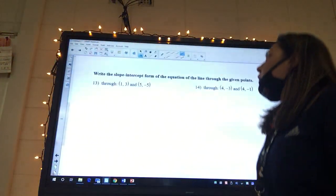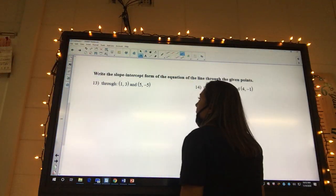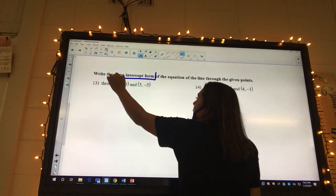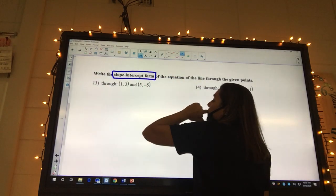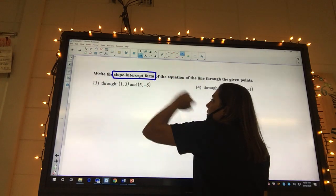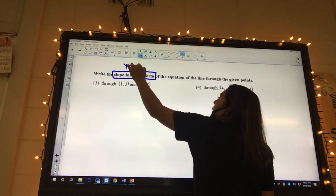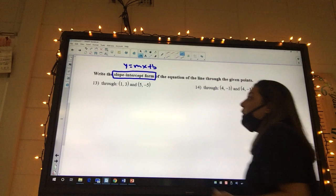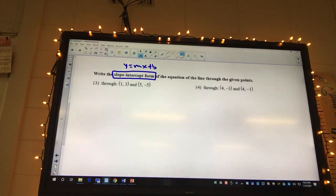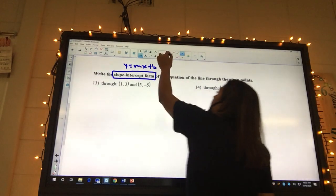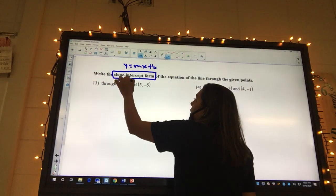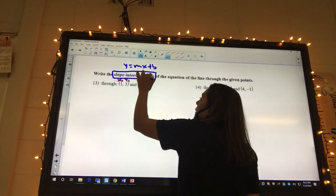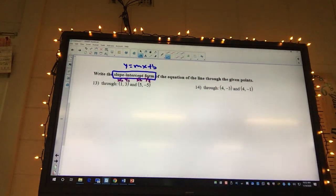So it says write the slope intercept form, that's what we're trying to get to for our answer. Slope intercept form is y equals mx plus b. That's what we want our answer to look like, the y all by itself. So we know what we need our answer to look like.